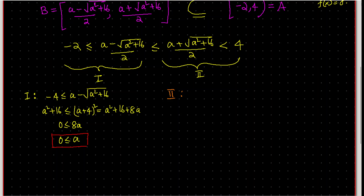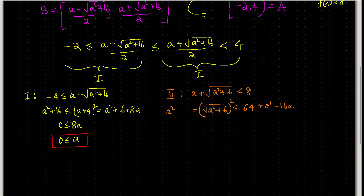Solving Inequality 2: (a + √(a²+16))/2 < 4, so a + √(a²+16) < 8. Rearranging and squaring gives a²+16 < 64 + a² - 16a, which means 16a < 48, so a < 3. Observe that this inequality is strict.